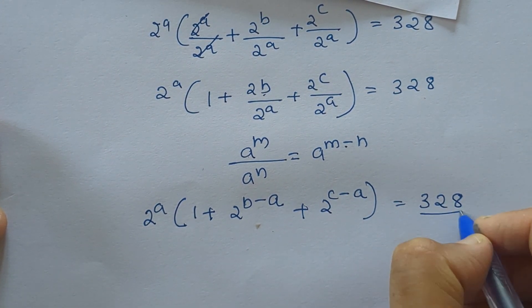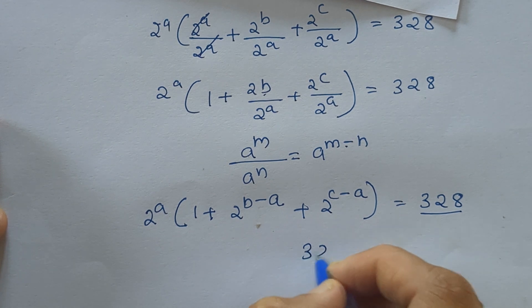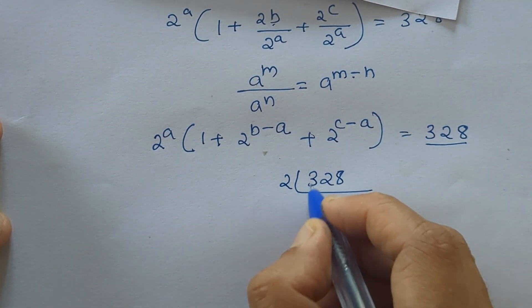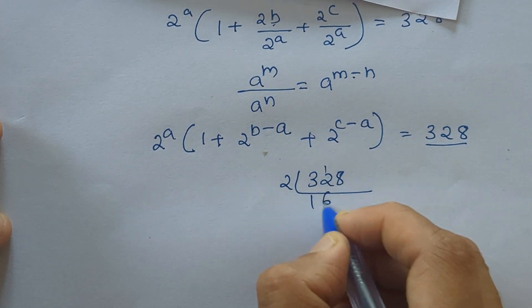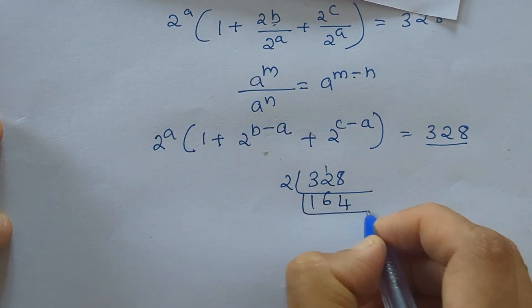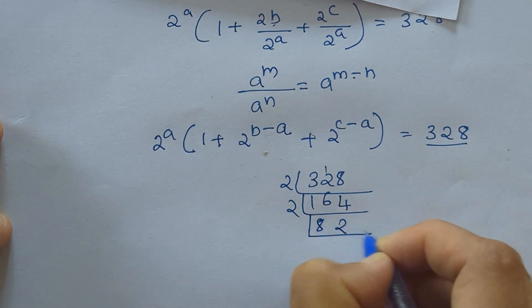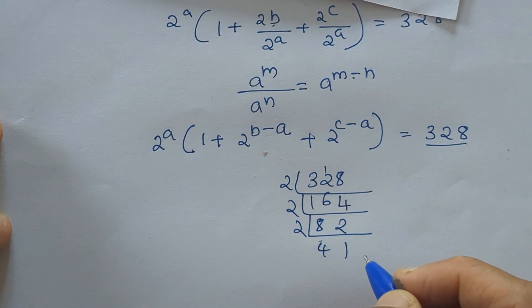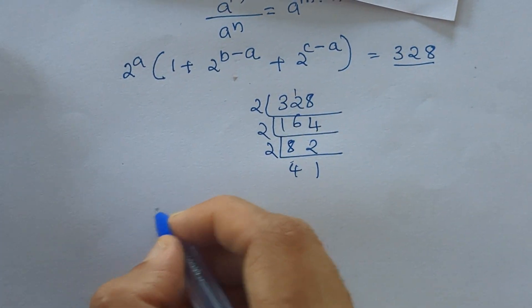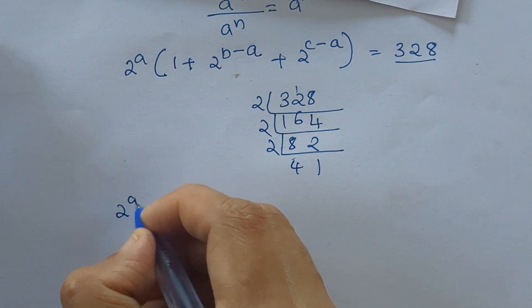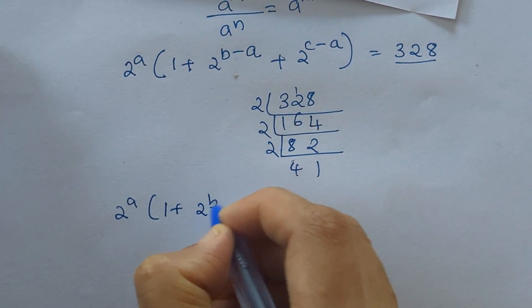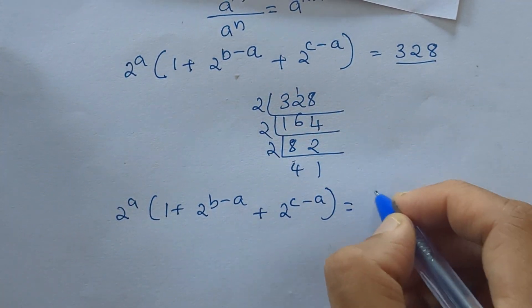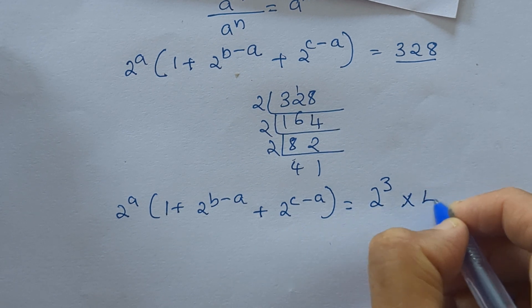Now let's factorize 328. That is 2 times 164, times 2 is 82, times 2 is 41. Now 41 is a prime number, we cannot further factorize. So we can write 2 raised to A into 1 plus 2 raised to B minus A plus 2 raised to C minus A equal to 2 raised to 3 into 41.